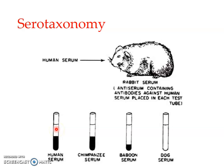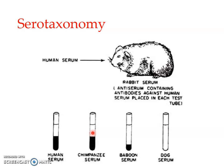The anti-human serum contains antibodies against the human serum. When mixed with human serum, the antibodies and the antigen react, agglutinate, and cause precipitation — giving maximum precipitation with human blood. When mixed with chimpanzee serum, the shaded part representing precipitation is measured. The precipitation with chimpanzee serum is almost equal to that with human serum.